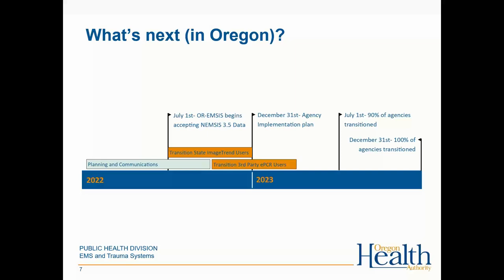This puts us on track to achieve our implementation goals: by July 1st of next year, we would like 90% of agencies transitioned to NEMSIS 3.5, and by December 31st, 100% of agencies transitioned. As a reminder, end of 2023 is when NEMSIS will stop accepting the NEMSIS 3.4 data.